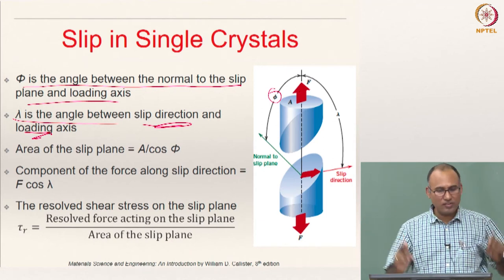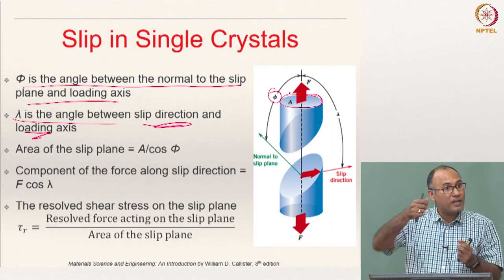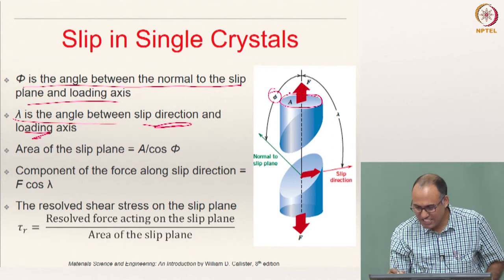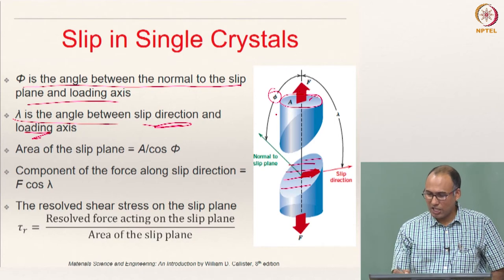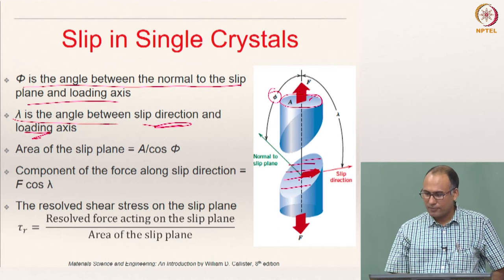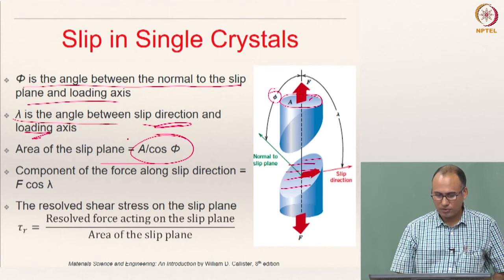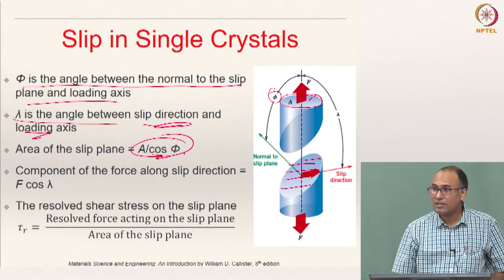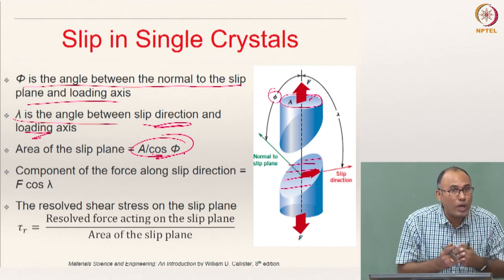What is the area of the slip plane? If the cross-sectional area of the plane normal to the applied load is A, and the normal to the slip plane makes angle phi with the loading direction, then the area of the slip plane is A divided by cos phi. That is the area of your slip plane on which you are expecting slip to happen.